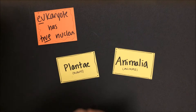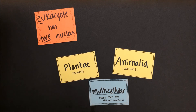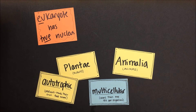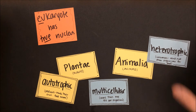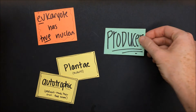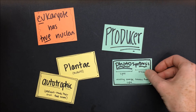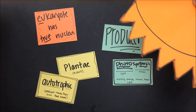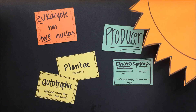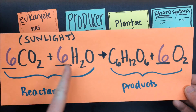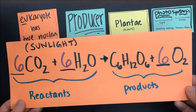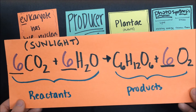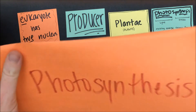Now let's look at some eukaryotic cells — specifically plant cells and animal cells. Both plants and animals are always multicellular, but they differ in terms of their energy metabolism. Plants are autotrophs, meaning that they can make their own food, whereas animals are heterotrophs — they must eat other organisms for food. Plants are able to make their own food because they are producers. They can use a process called photosynthesis to harness energy from the sun and turn it into a usable form called glucose. In the presence of sunlight, carbon dioxide and water are turned into glucose sugar and oxygen. We will eventually learn all of the parts of this chemical equation. This process is called photosynthesis.